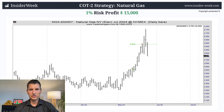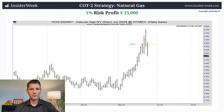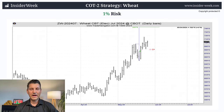Let's have a look at the trade in Natural Gas. As you can see, I got my entry pattern for a long trade. I risked one percent of my COT2 trading account. The position was closed by achieving the price target, and I made a profit of $15,000.